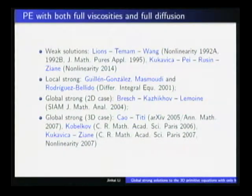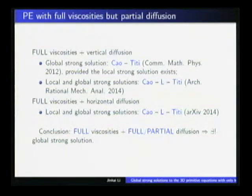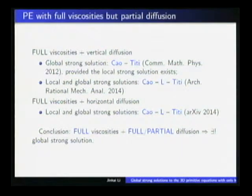This is the global strong solutions to the system with full viscosity and full diffusion. It turns out that this global existence and uniqueness of strong solutions continue to hold for the system with full viscosity, but with only partial diffusion. Here, partial diffusion means with vertical diffusion or horizontal diffusion. Anyway, we need some diffusion to guarantee the global existence. In fact, I will emphasize that we must need some viscosities. In fact, if without any viscosity, the solution may blow up in finite time.